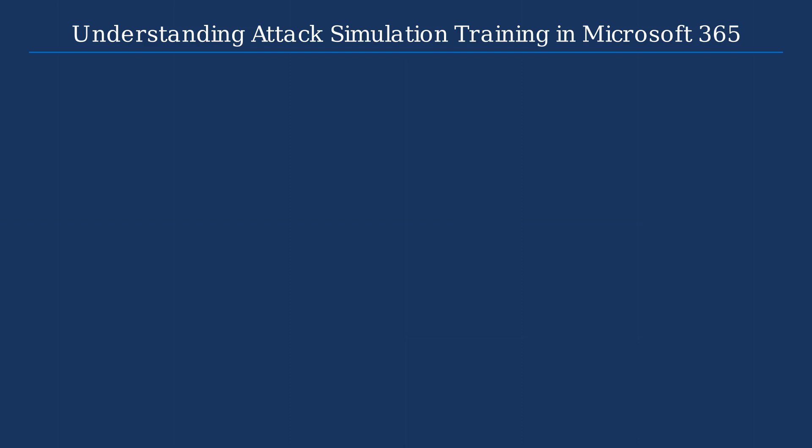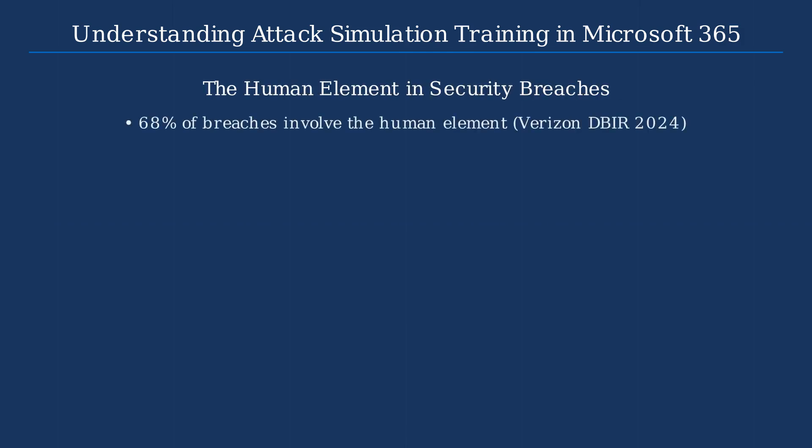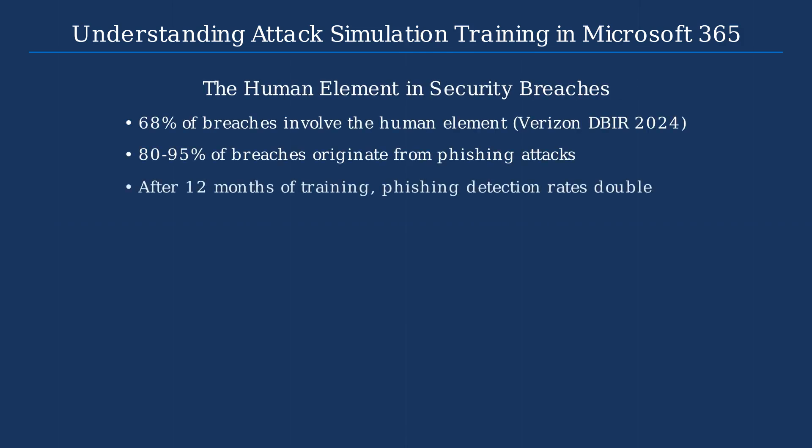Understanding the scale of the threat is critical to appreciating the importance of ATT&CK Simulation Training. According to Verizon's 2024 Data Breach Investigations Report, the human element is involved in 68% of breaches, and between 80 to 95% of these incidents originate from phishing attacks. Studies show that after 12 months of regular phishing training, users' ability to detect and report malicious content more than doubles.